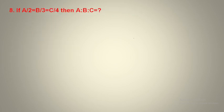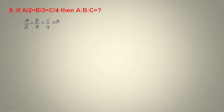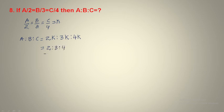Next, question number 8: a/2 = b/3 = c/4. Then a is to b is to c equals what? Consider this equals k. So a/2 = k means a = 2k. b/3 = k means b = 3k. c/4 = k means c = 4k. Cancel k, and the final ratio is 2 is to 3 is to 4.